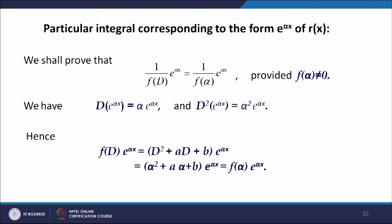Now we study short methods for finding particular integrals when r(x) takes special forms. The first result concerns r(x) as an exponential function: if r(x) = e^(αx) where α is a real or complex constant, then (1/F(D))·e^(αx) = e^(αx)/F(α), provided F(α) ≠ 0.